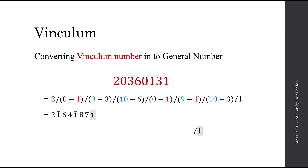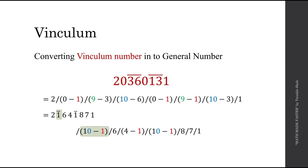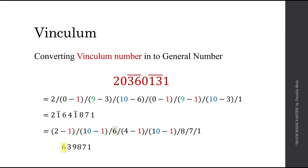Continuing simplification: we keep 1 and 7 and 8. We subtract 1 from 10 and subtract 1 from the previous digit, giving 4 minus 1. Keep 6 as is, subtract 1 from 10 and subtract 1 from the previous digit, giving 2 minus 1. Final simplification: 10 minus 1 is 9, 4 minus 1 is 3, 10 minus 1 is 9, and 2 minus 1 is 1. So our answer is 1, 7, 8, 9, 3, 6, 9, 1.